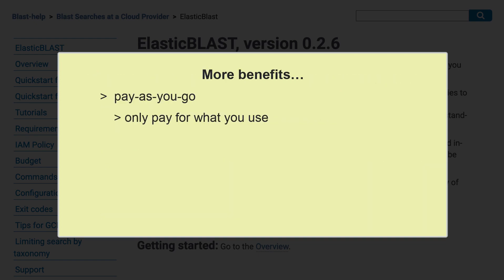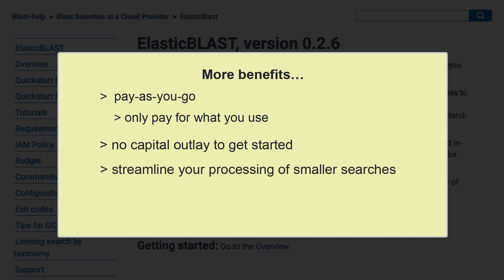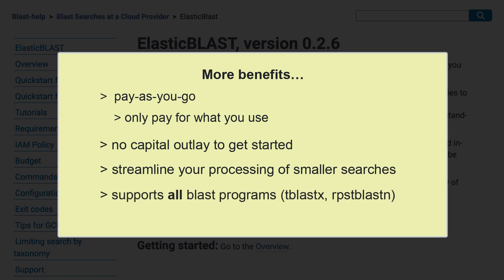Elastic Blast uses a cloud pay-as-you-go model — that is, you only pay for what you use — and there is no capital outlay to get started. So even if you have smaller queries, Elastic Blast can greatly streamline your processing. Elastic Blast supports all BLAST programs, including tblastx and rps-tblastn, and it supports taxonomic filtering.